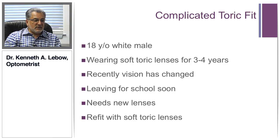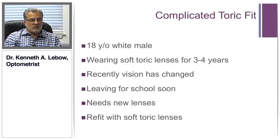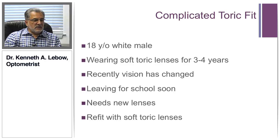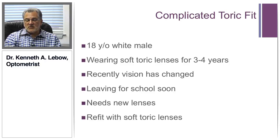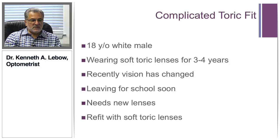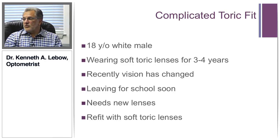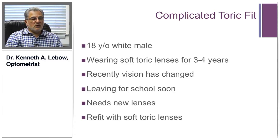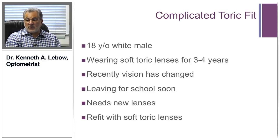These are the topographies of an 18-year-old white male who came to see me in 1997. He was wearing soft toric lenses for about three or four years. Recently his vision had changed and he was leaving for school within the next week or two, so I didn't have a whole lot of time. We refit him with soft toric lenses, and his corrected visual acuity at the time was about 20-20 to 20-25.